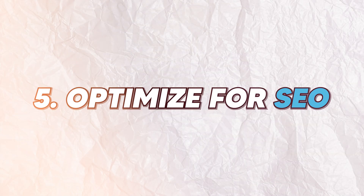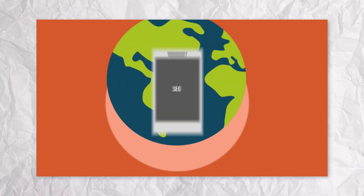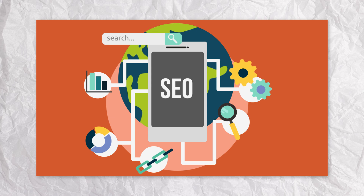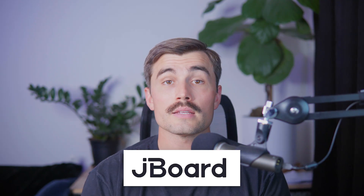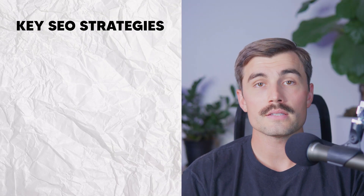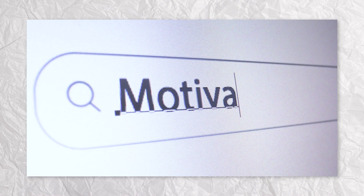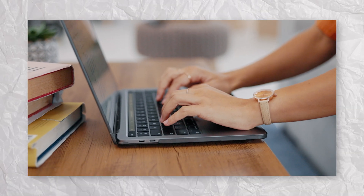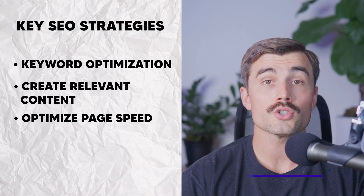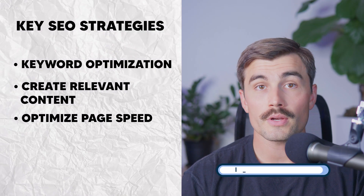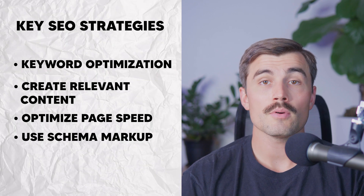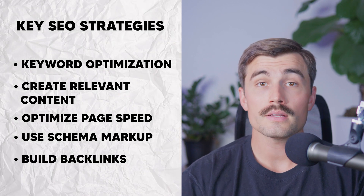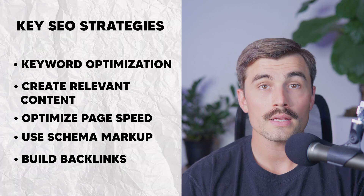Step five, optimize for SEO. SEO optimization is crucial for driving traffic to your job board. Use SEO tools to optimize your site for search engines by organizing and tagging your pages based on job type, category, and location. Platforms like JBoard come with built-in SEO features to help you get started. Key SEO strategies include: keyword optimization — use relevant keywords in job descriptions, titles, and meta tags; create relevant content with blog posts and articles related to your niche; optimize page speed to improve user experience and search engine rankings; use schema markup to help search engines understand your job listings; and build backlinks to increase your site's authority.